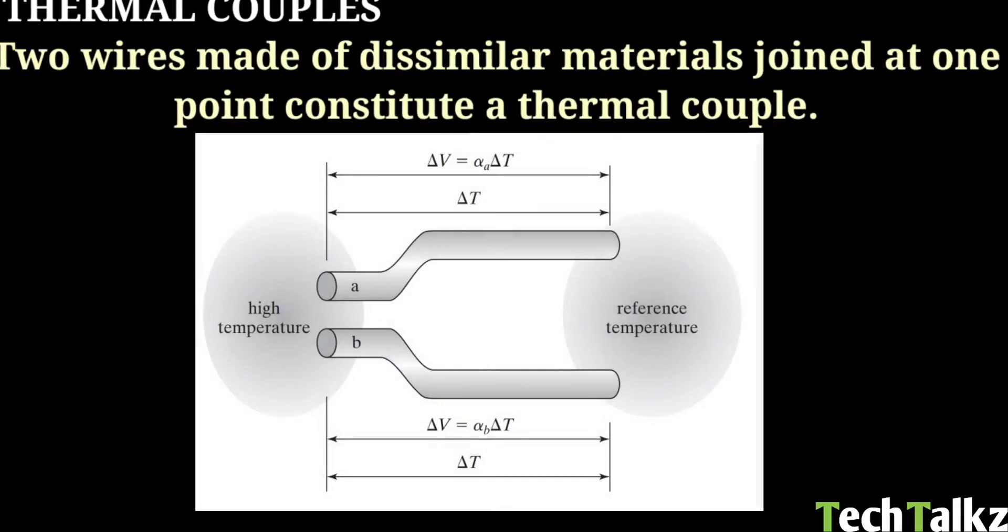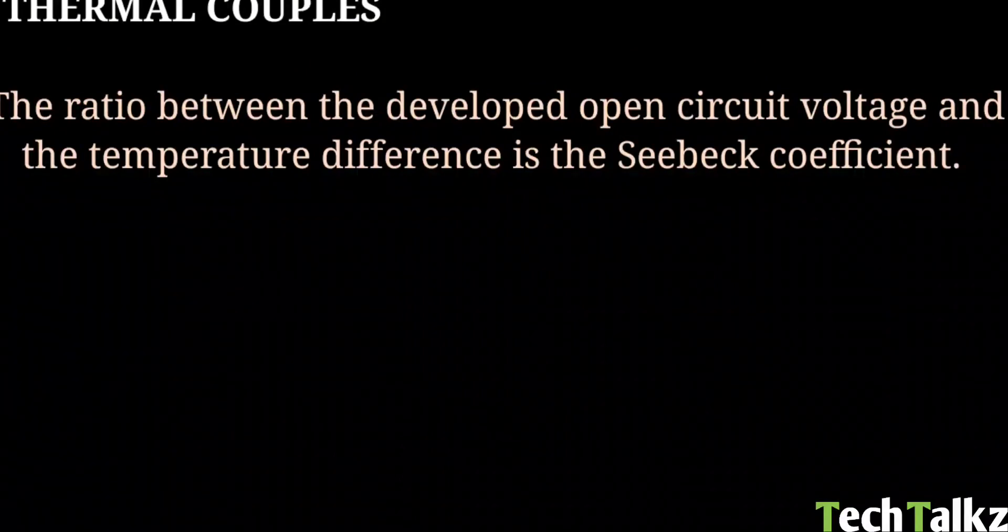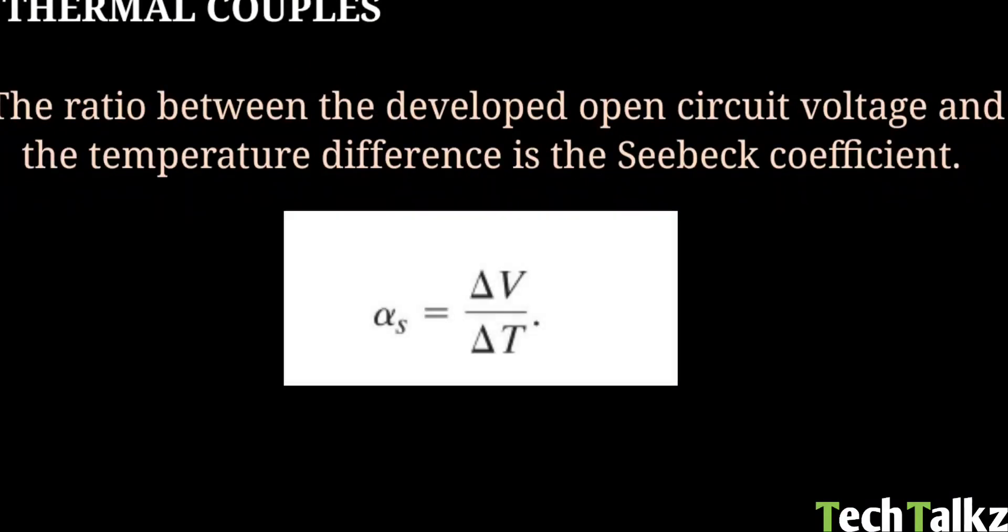Two wires made of dissimilar materials joined at one point is called a thermal couple. A thermal couple is most commonly used to measure the temperature difference between the joint sensing junction and the reference junction. The ratio between the developed open circuit voltage and the temperature difference is called the Seebeck coefficient. Seebeck coefficient is represented as alpha s, that is delta V upon delta T.